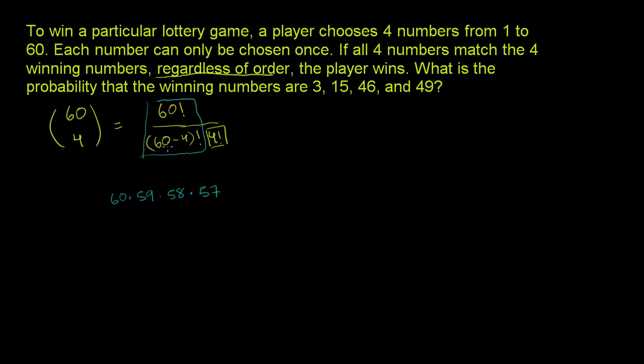But anyway, let's just evaluate this. This will tell us how many possible outcomes are there for the lottery game. So this is equal to, we already said the blue part is equivalent to 60 times 59 times 58 times 57. That's literally 60 factorial divided by 56 factorial. And then you have your 4 factorial over here, which is 4 times 3 times 2 times 1. And we could simplify it a little bit before we break out the calculator. 60 divided by 4 is 15, 15 divided by 3 is 5, 58 divided by 2 is 29. So our answer is going to be 5 times 59 times 29 times 57.